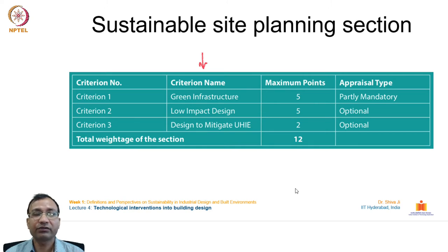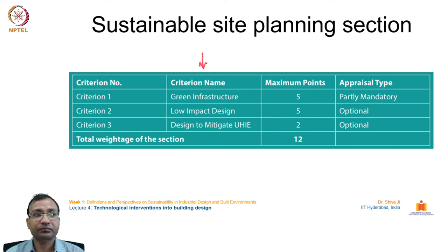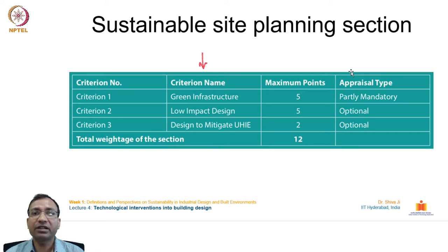The sustainable site planning section has three criteria: green infrastructure (5 points), low impact design, and design to mitigate urban heat island effect (2 points), totalling 12 points. Site planning begins at the preliminary conceptualization stage and must account for site location, natural features, and existing elements on site. Green infrastructure encompasses energy harvesting units and resource-efficient methodologies.